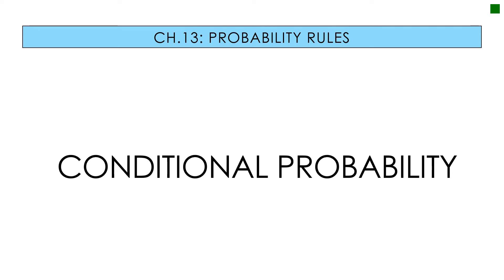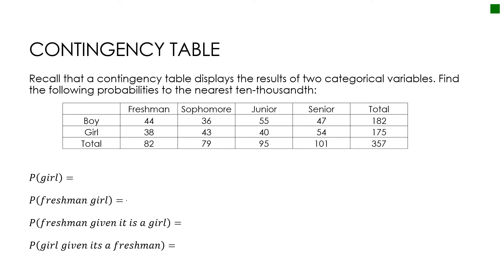Now let's take a look at some conditional probabilities. This should look familiar because we did talk about it when we talked about contingency tables with two categorical variables. We're going to talk about it now in a little more depth and detail. We have a contingency table with two categorical variables, and we want to find these probabilities to the nearest ten-thousandth. Let's take a moment to look at place values real quick.